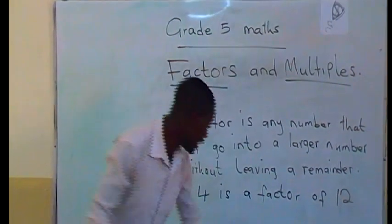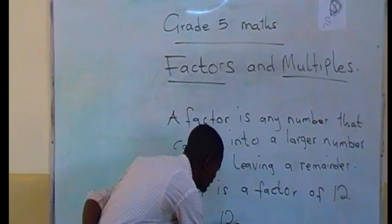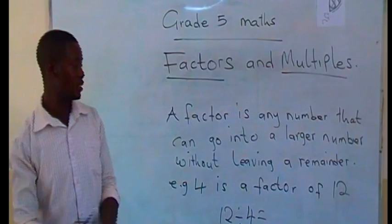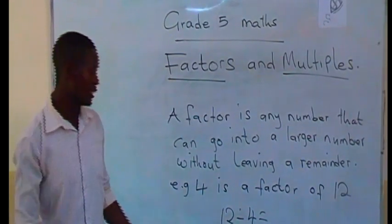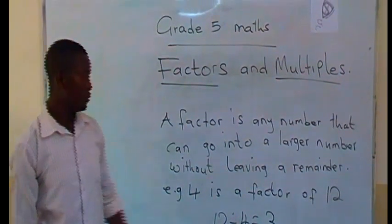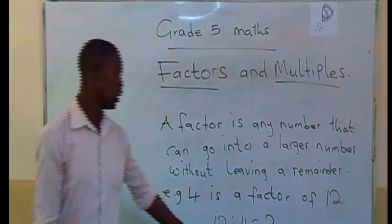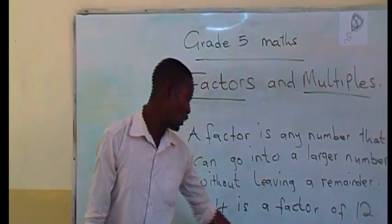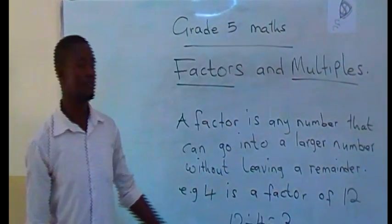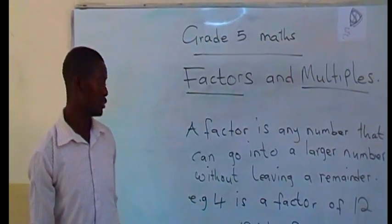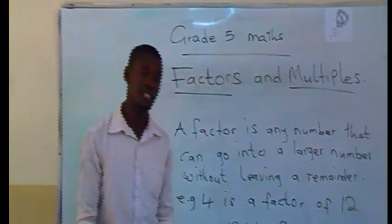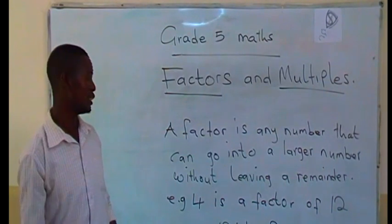How can we prove that? By dividing 12 by 4. Can 4 go into 12 exactly without leaving a remainder? Yes — it can go 3 times. 3 times 4 equals 12. So 4 is a factor of 12, and even 3 is also a factor of 12. You can prove this using the fact that multiplication is the inverse of division.